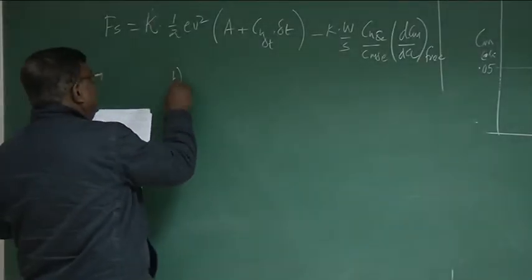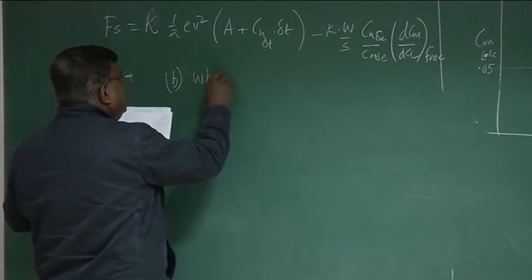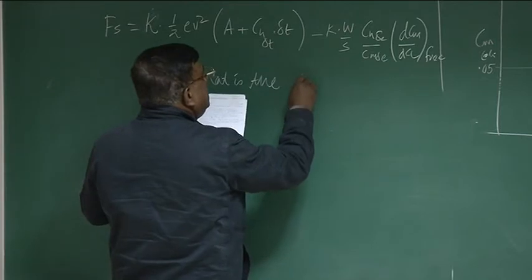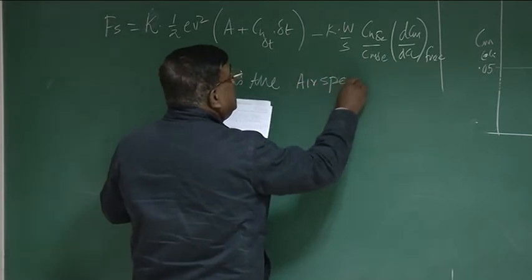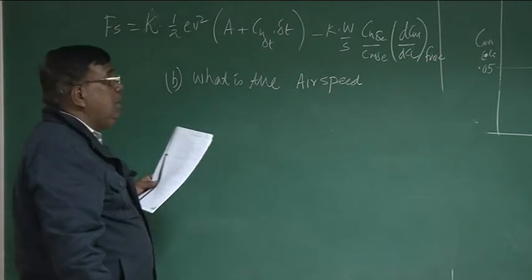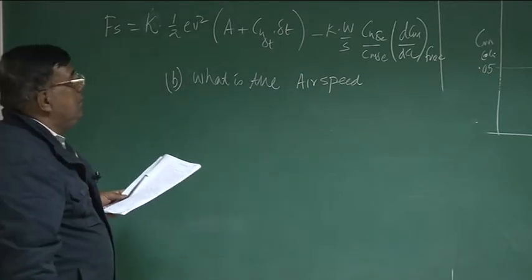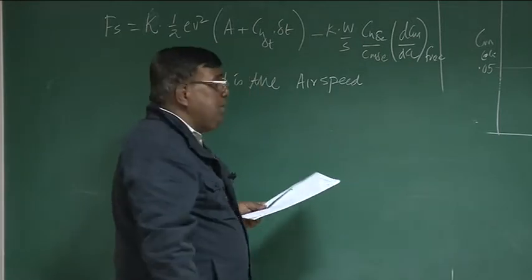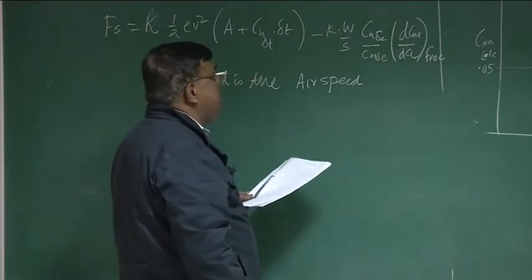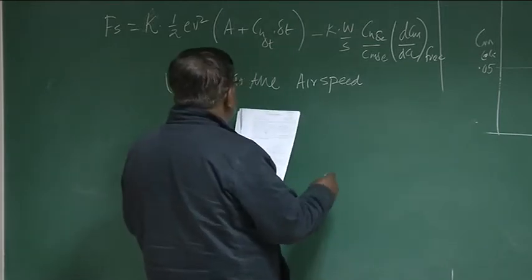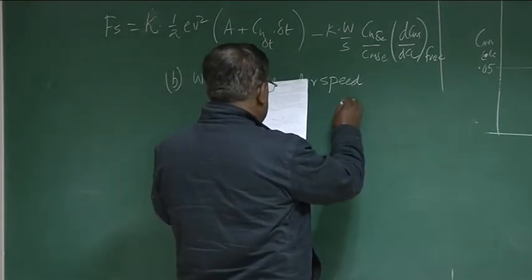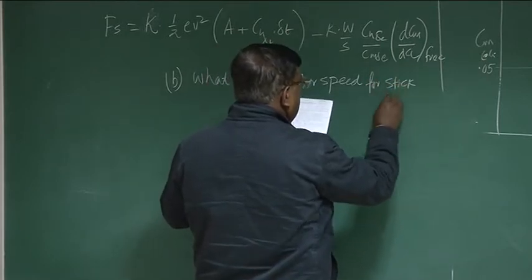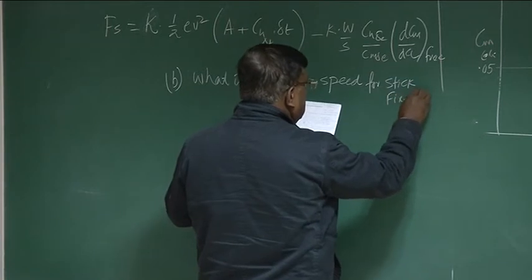Second question is, what is the airspeed? We call it indicated airspeed, and you know indicated airspeed has a meaning, but it is basically an equivalent airspeed. It is basically relative airspeed, and that is the airplane speed relative to the medium. What is this airspeed for the stick fixed case?